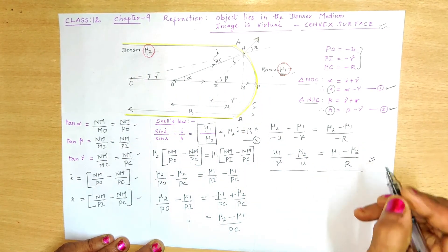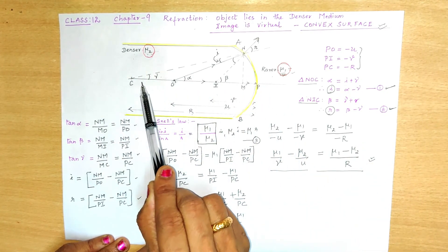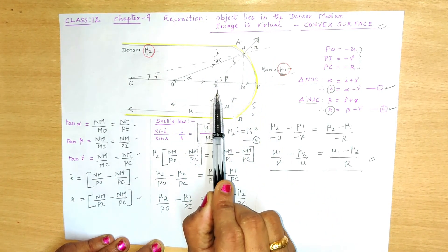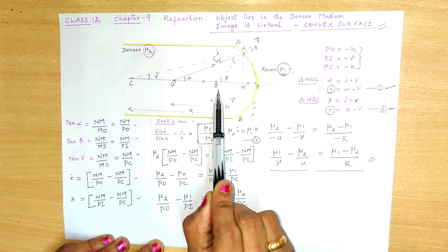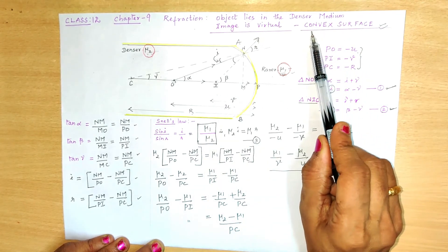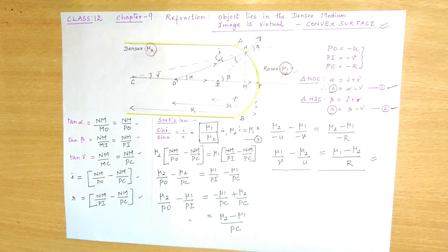For this condition, when light travels from a denser medium and the image formed is virtual — also in the denser medium — this occurs at a convex surface. I hope you understood this well. Thank you for watching.